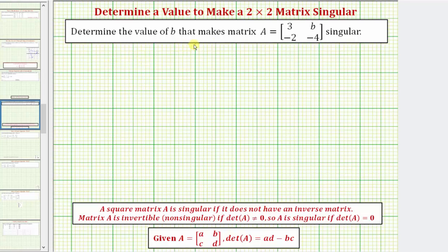We want to determine the value of b that makes matrix A singular. Notice b is the element in row one, column two.